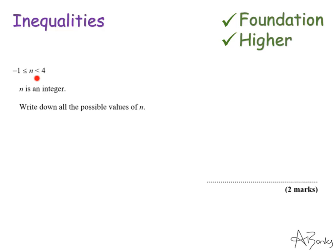So all I'm going to do for this question is list all the numbers between minus one and four. I'm going to include minus one in my list but not include four. That's minus one, zero, one, two, three — but not four. So those are all the possible integer values for n.